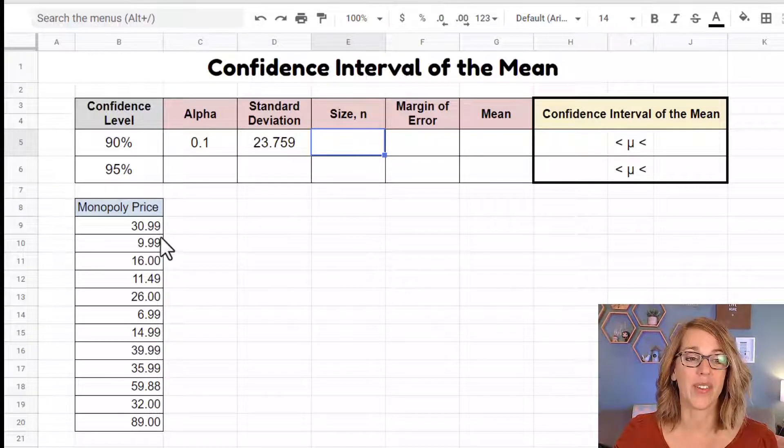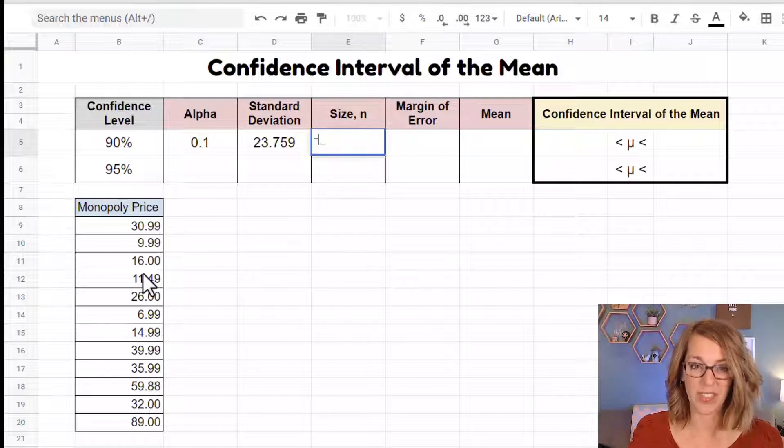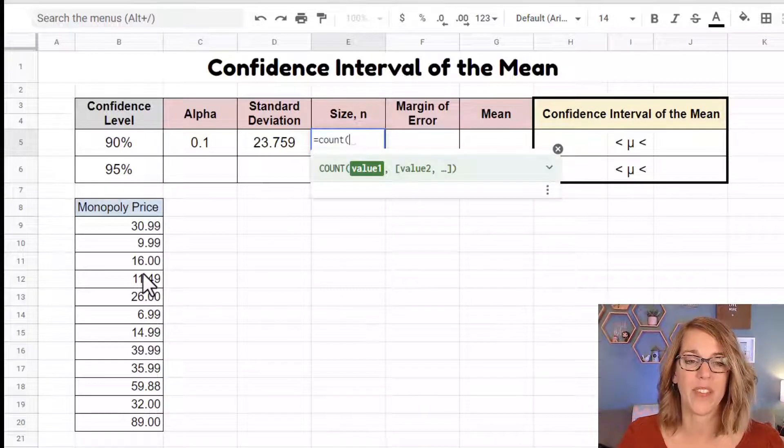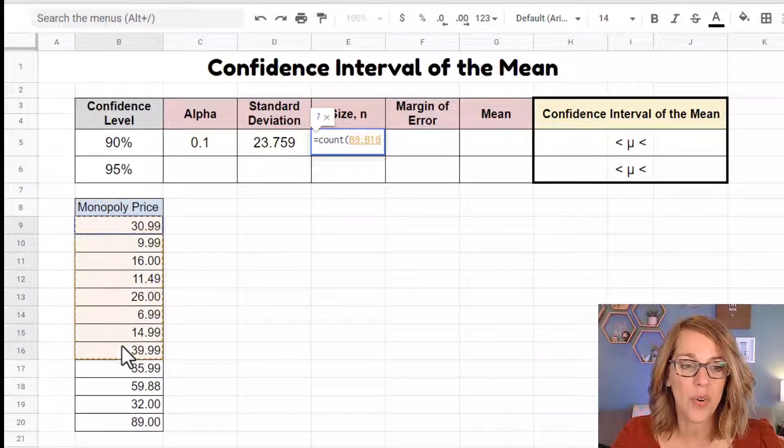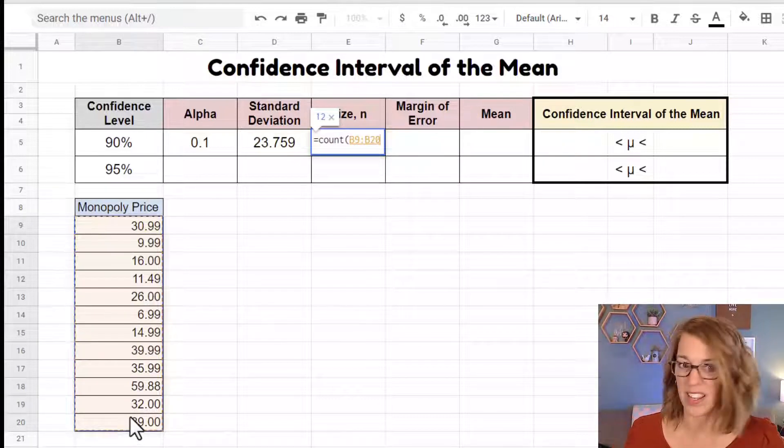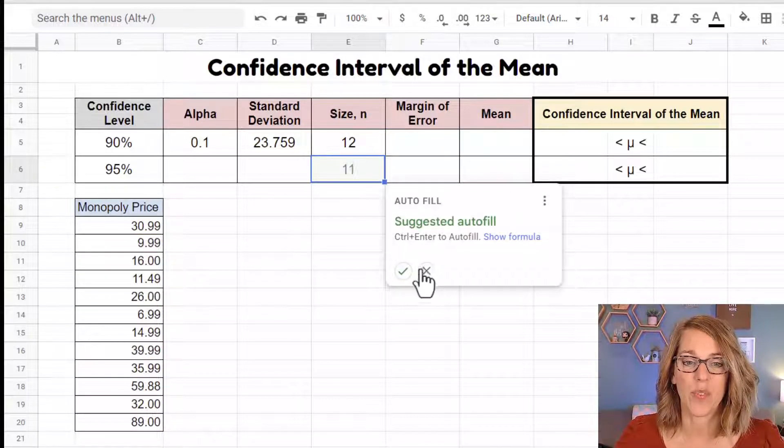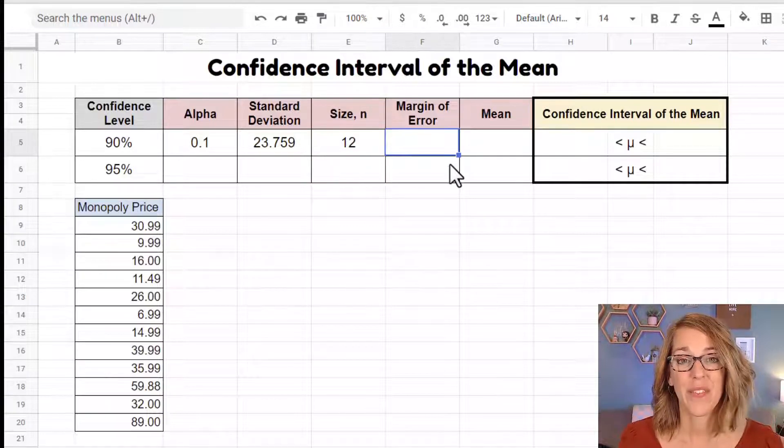Next is our sample size. So I just want the count here. This is equals count parenthesis. And I'm again going to click, hold and drag through my data and then hit enter. And I've got 12 there now for the margin of error.